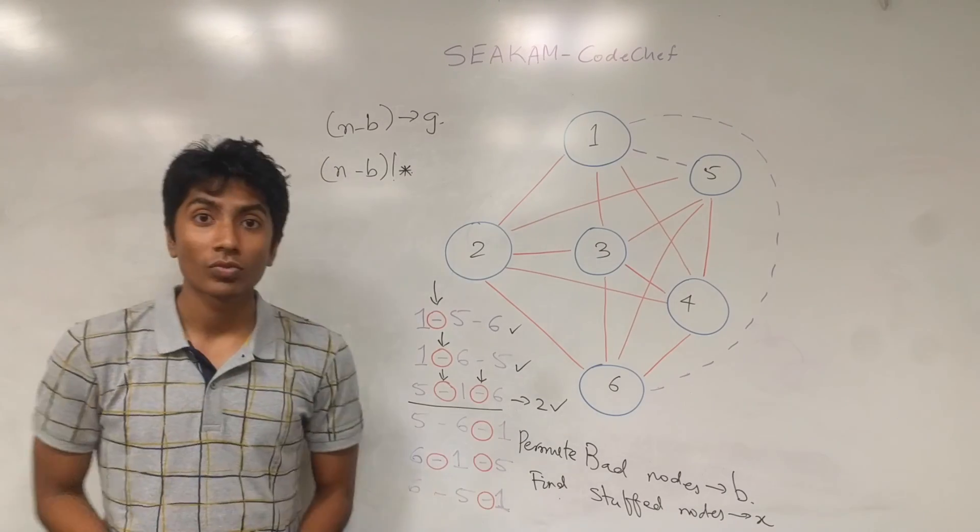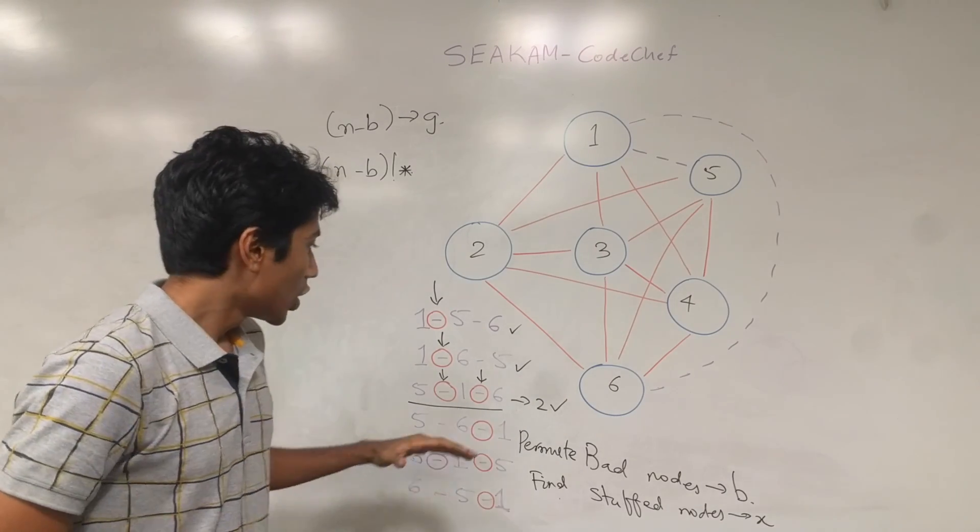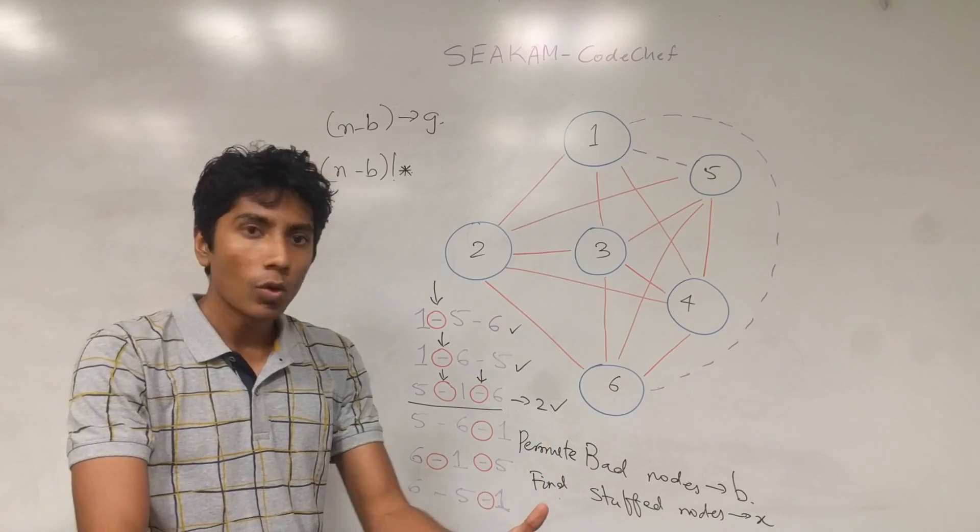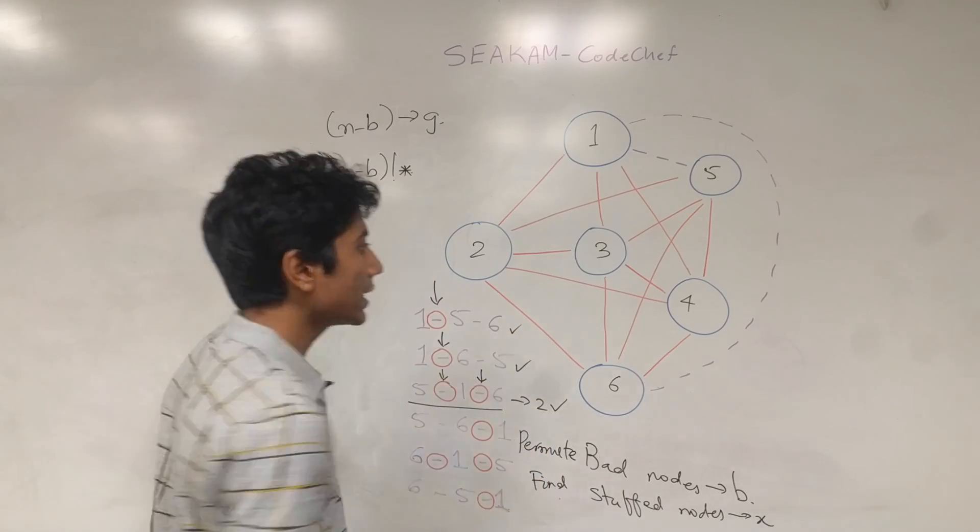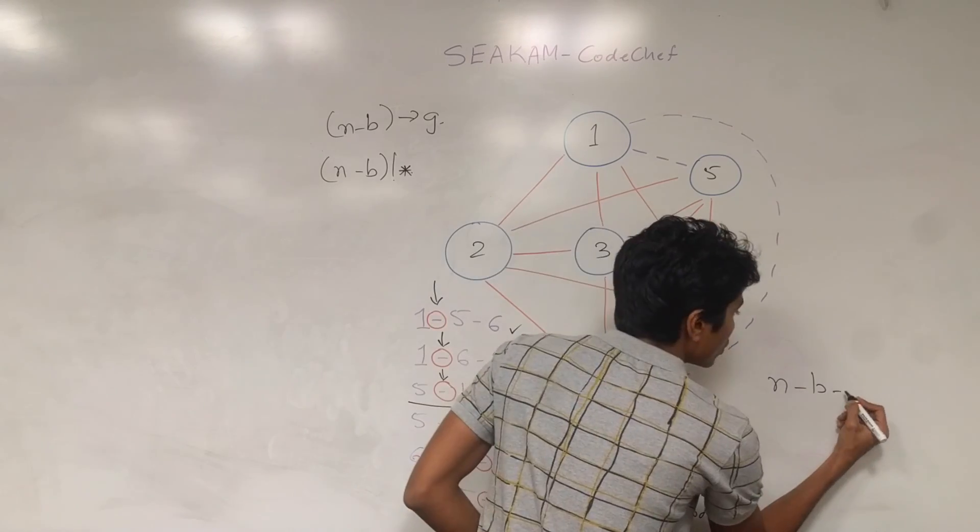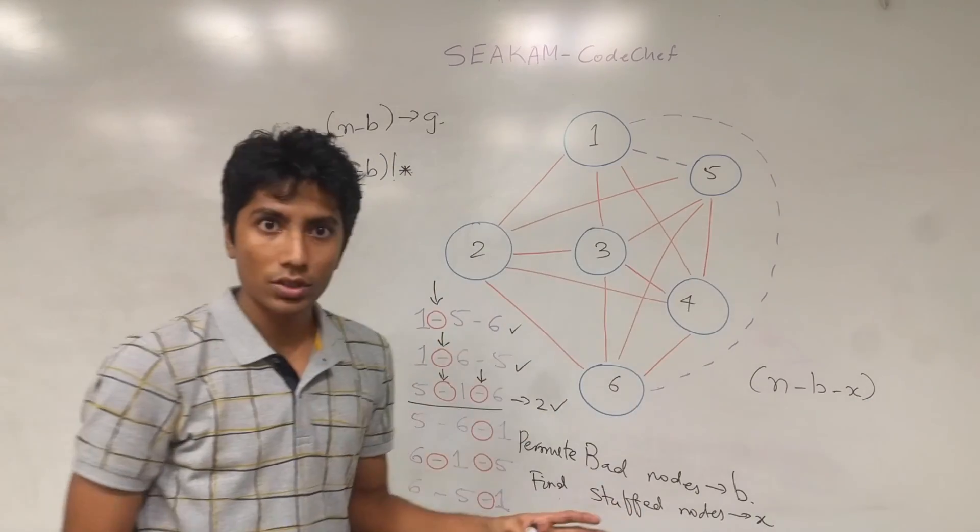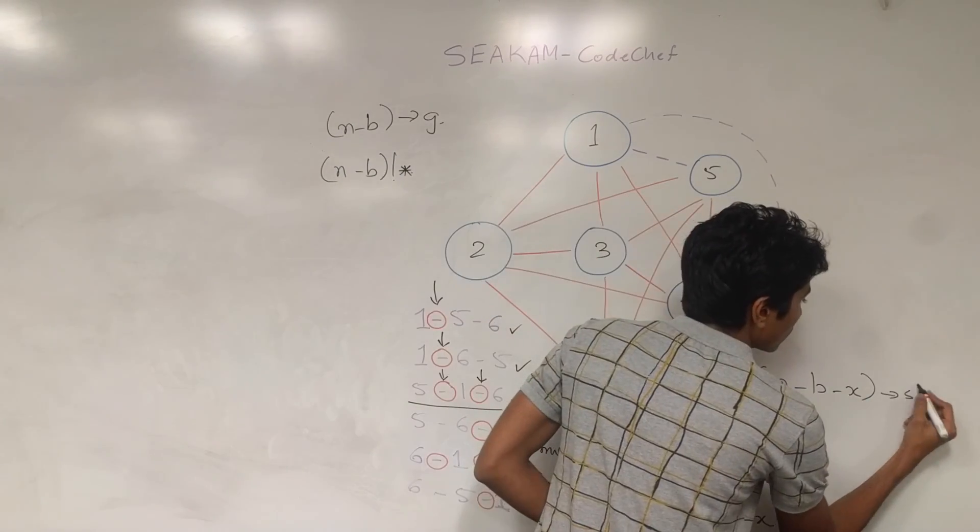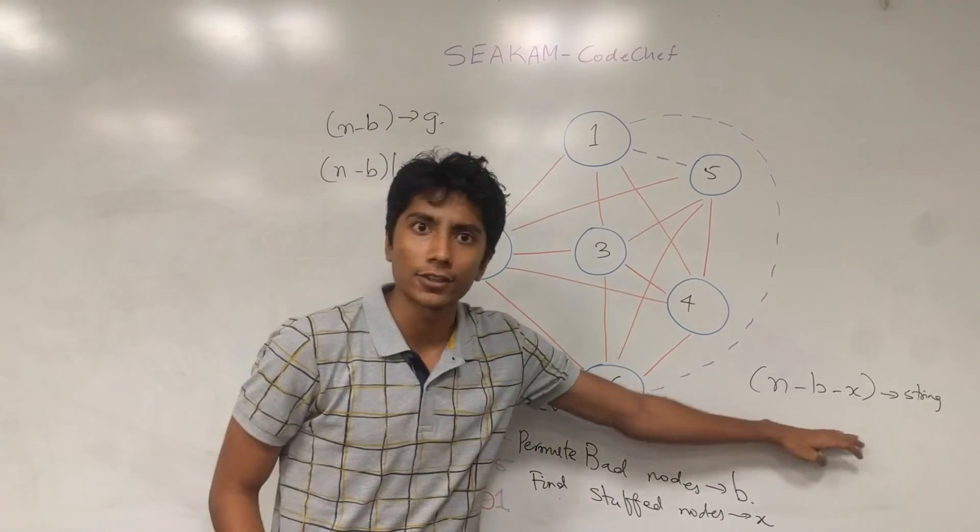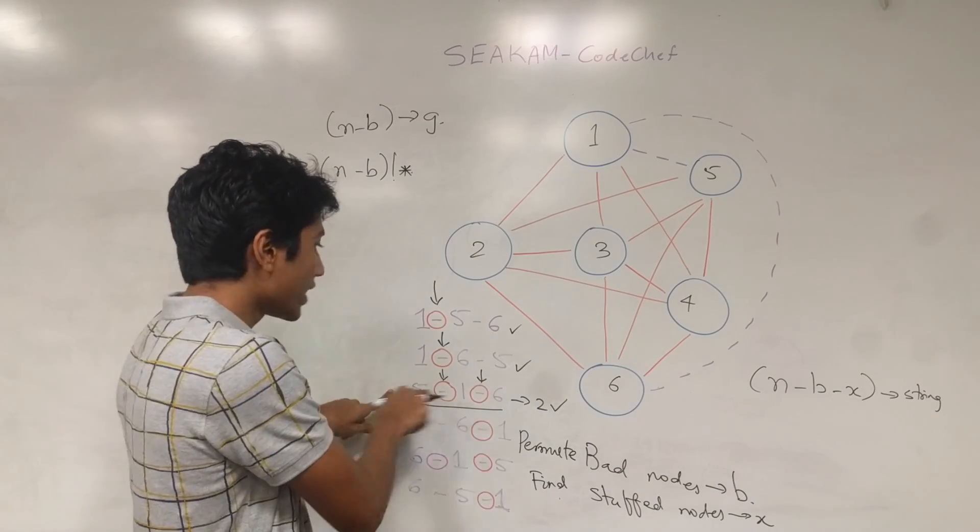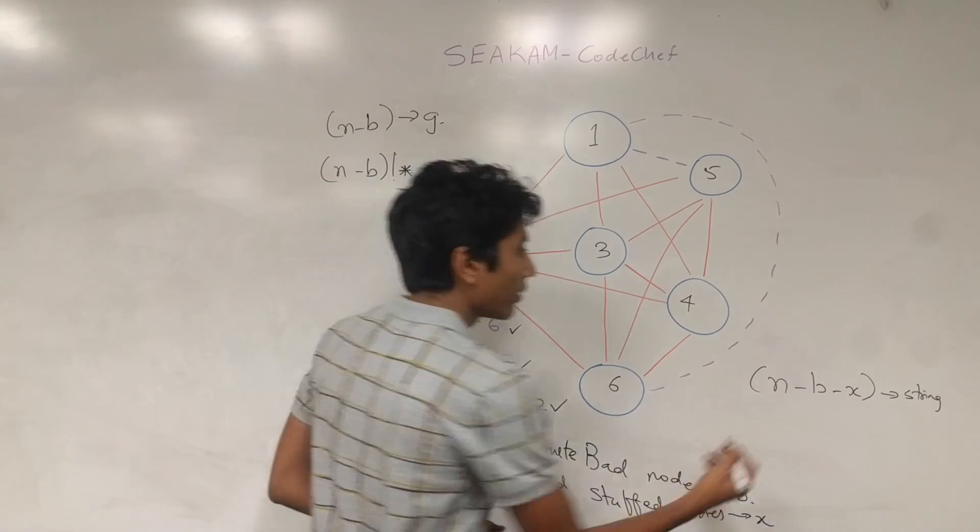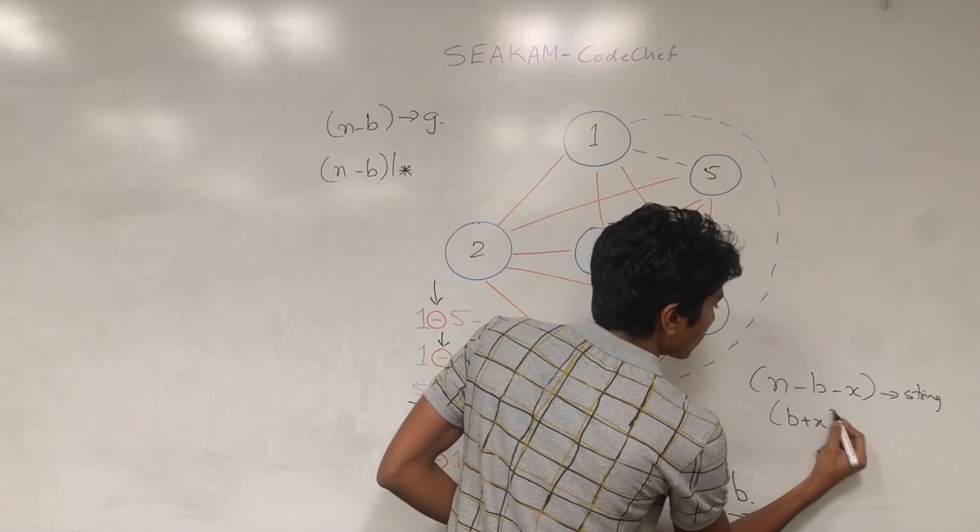Now here's the interesting part. What you need is to take this arrangement with the stuffed nodes and mix them with the remaining nodes. The remaining nodes, of course, is total number of nodes n minus the number of bad nodes you had minus the number of nodes you tied down. So these are the remaining nodes. That is, let's say, a string. That's one string with these many characters. The second string that you have is this arrangement itself. It has an ordering. And the number of characters you have in this, of course, is b plus x. This is the second string.